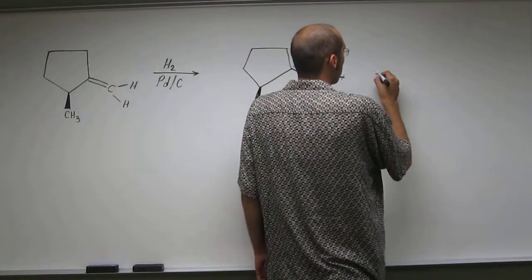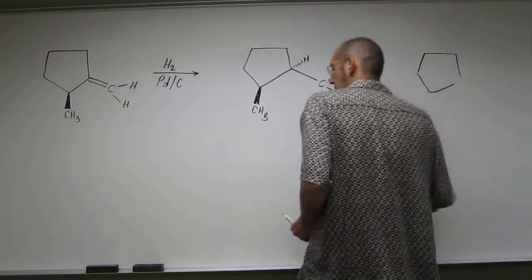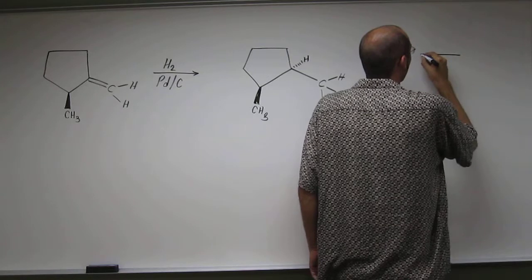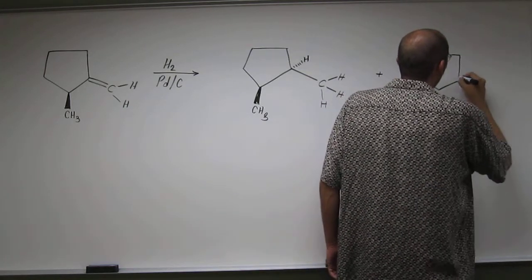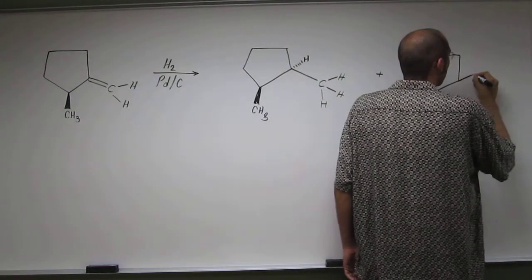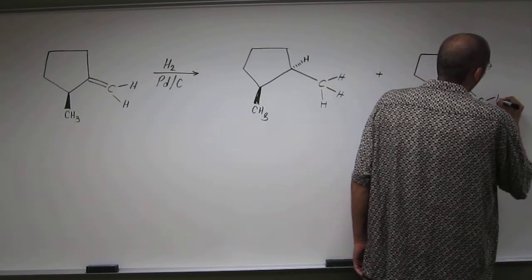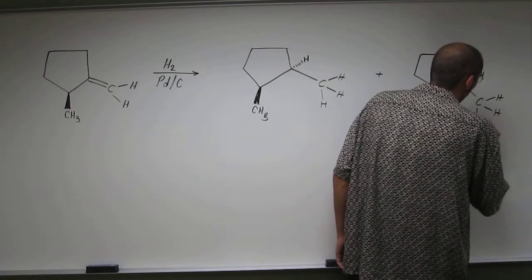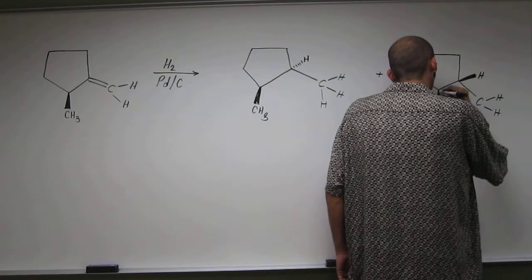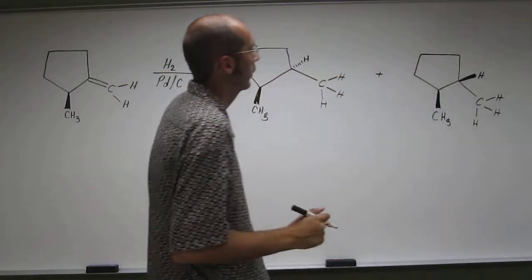And you'd also get the other isomer, ugly cyclopentane. Okay, so if this one added from the back, then this one of course is going to give you the other diastereomer and add to the front. It gives you the molecule that looks like this.